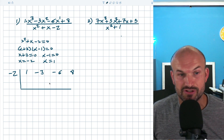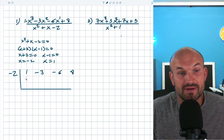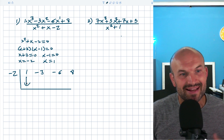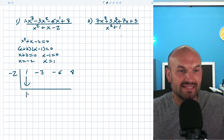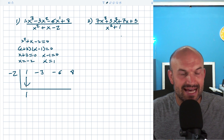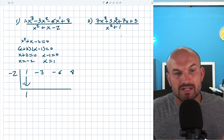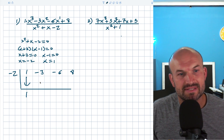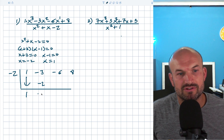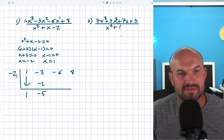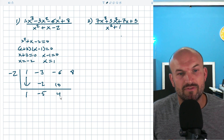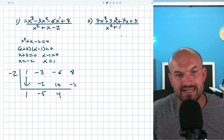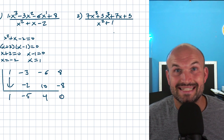Now applying the synthetic division algorithm: the first step is to bring down the first term. Then we multiply on the diagonal and add on the vertical, moving each product to the next column. One times negative two is negative two. Negative three plus negative two is negative five. Negative five times negative two is positive ten. Negative six plus ten is positive four. Four times negative two is negative eight. And then we get zero.